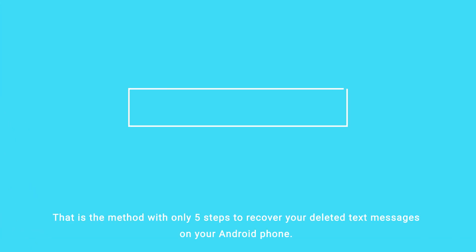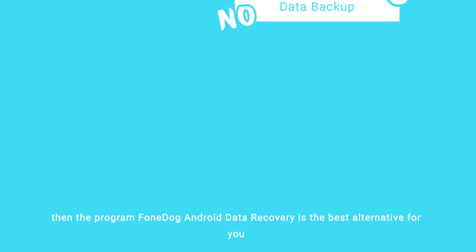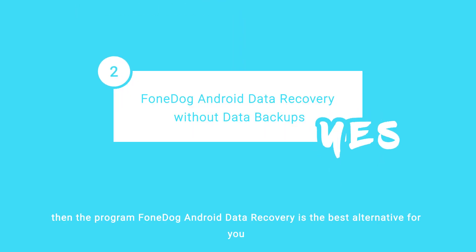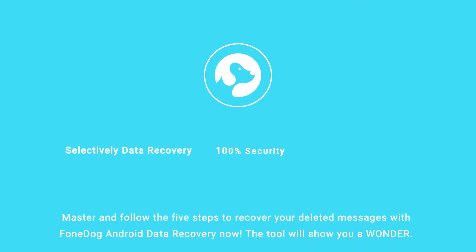That is the method with only 5 steps to recover your deleted text messages on your Android phone. Of course, it is also a big help if you have a data backup for the deleted text messages. If not, then PhoneDog Android Data Recovery is the best alternative for you. Master and follow the 5 steps to recover your deleted messages with PhoneDog Android Data Recovery now. The tool will show you a wonder.